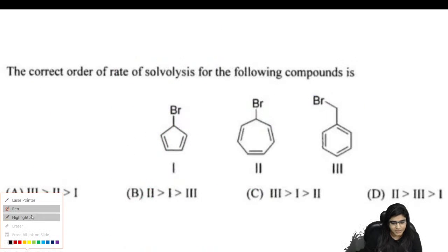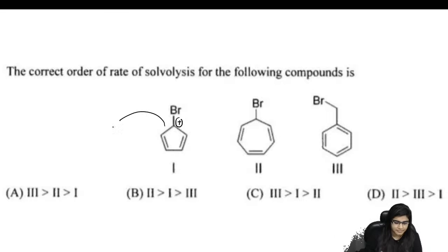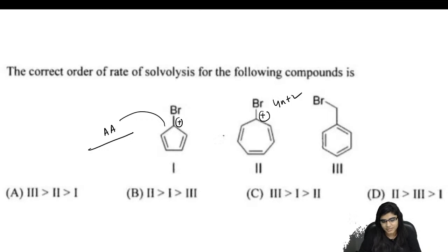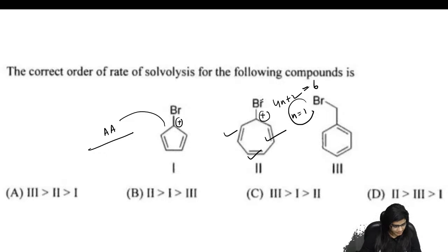For the second compound, the positive charge is present and it is sp2 hybridized with complete cyclic conjugation. Counting pi electrons: 4n+2 = 6, so n = 1. This compound is aromatic.